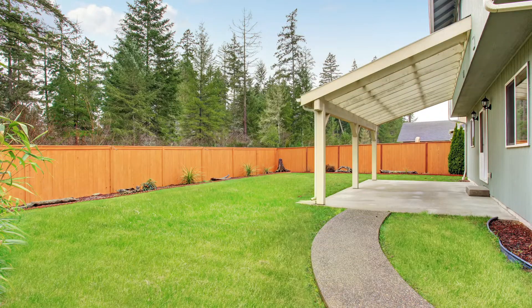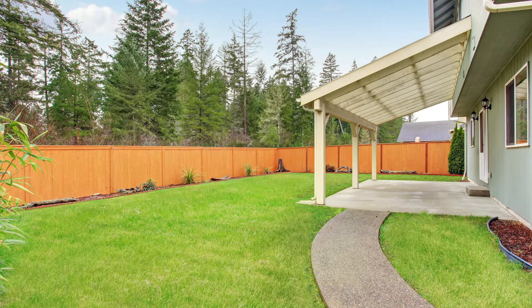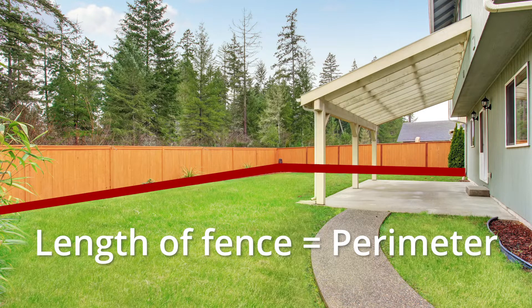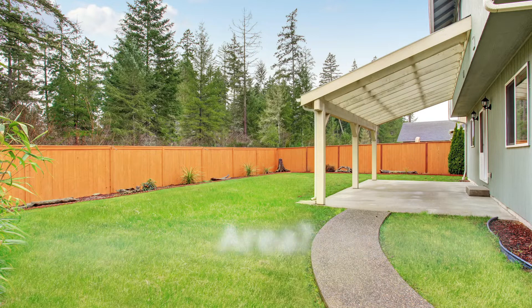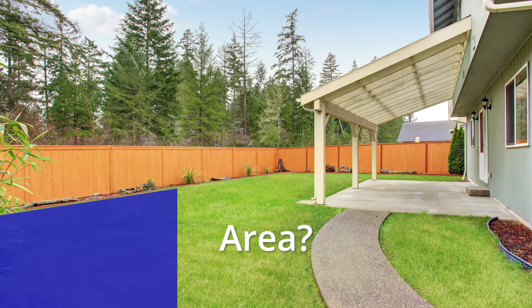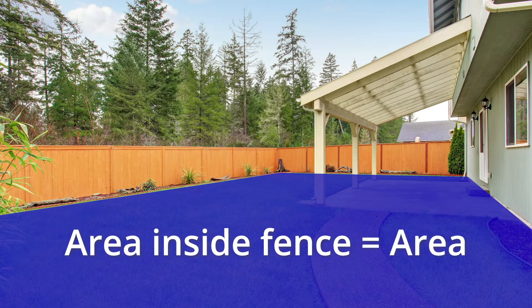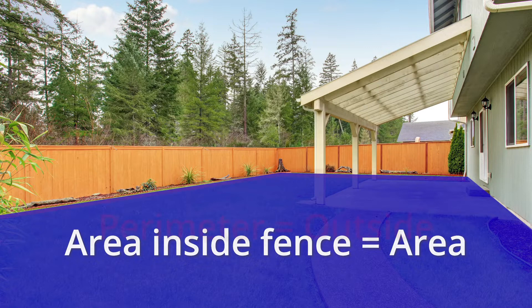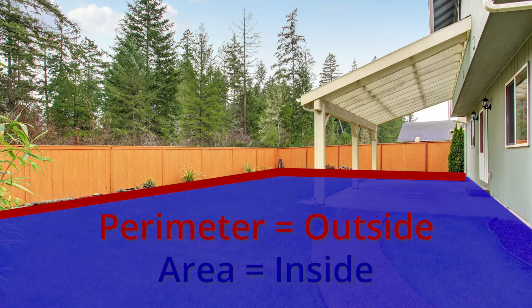Another way to think about it is to picture a fence around a yard. The total length of that fence is the perimeter of the yard. And what about the area? You guessed it, the area is the total space inside the yard. So the perimeter is the distance outside of a shape, and the area is the space inside of it.